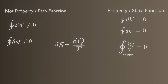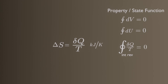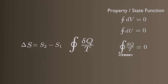Therefore, the quantity in the Clausius statement must represent a property in differential form, as its cyclic integral is zero. Clausius realized in 1865 that he had discovered a new thermodynamic property, and he chose to name it entropy. Entropy is an extensive property of a system. The entropy change of a system during a process can be determined by integrating this differential equation between the initial and final states. Note that we have defined the change in entropy rather than entropy itself, just as we defined the change in internal energy when developing the first law.